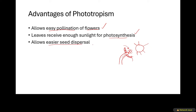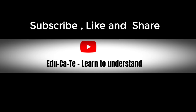Third, phototropism allows easier seed dispersal. When the wind wants to carry seeds away from the plant, if this plant is now more exposed to sunlight, it will be easier for the wind to disperse the seeds so they can start growing new plants in other regions. That is all about phototropism. In our next video we'll be talking about geotropism or gravitotropism. Thank you for watching, ladies and gentlemen — don't forget to subscribe and tell your friends.